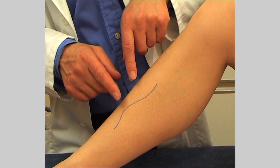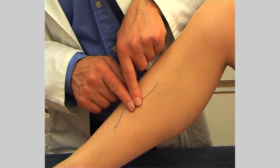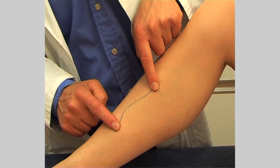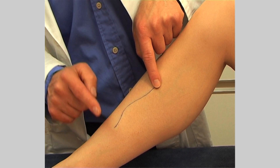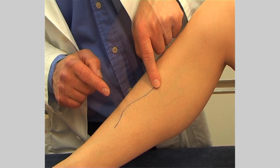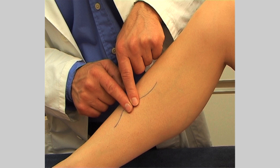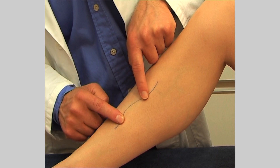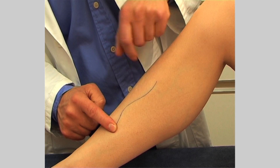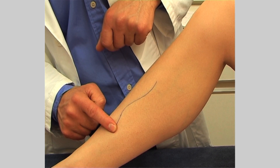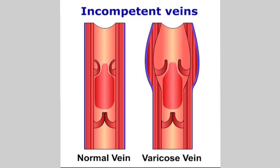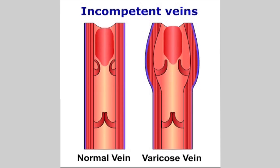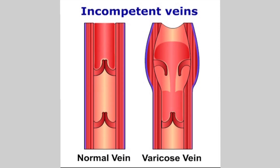First, lift the inferior finger and observe the vein — it should fill rapidly from below. Repeat the test but this time lift the superior finger. The vein should remain empty for a few moments if the valves are intact, thus preventing backflow.